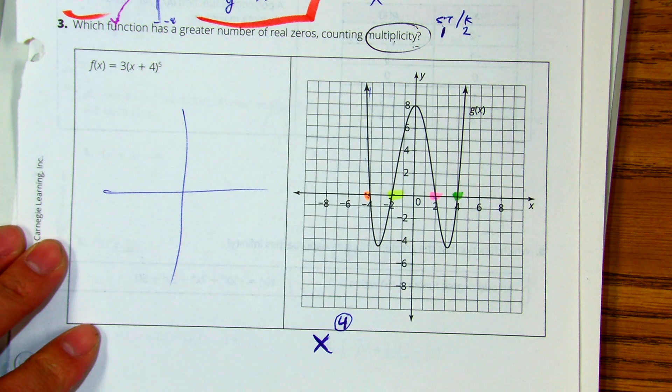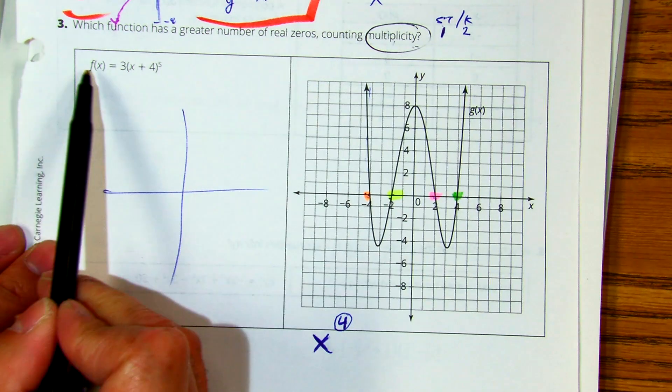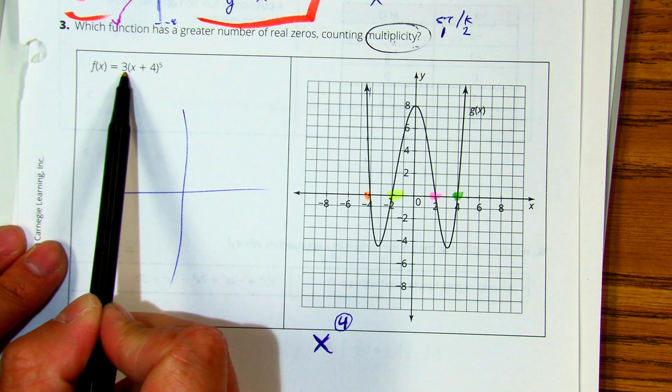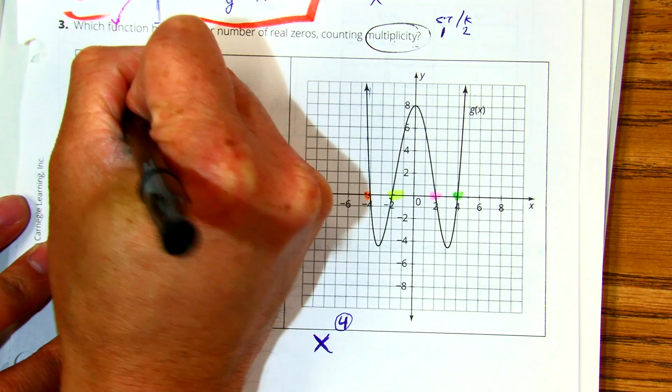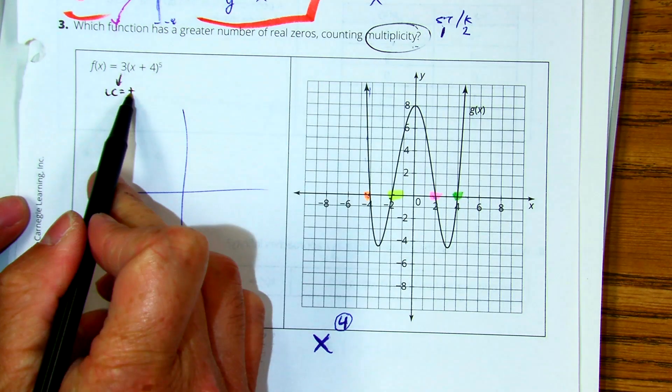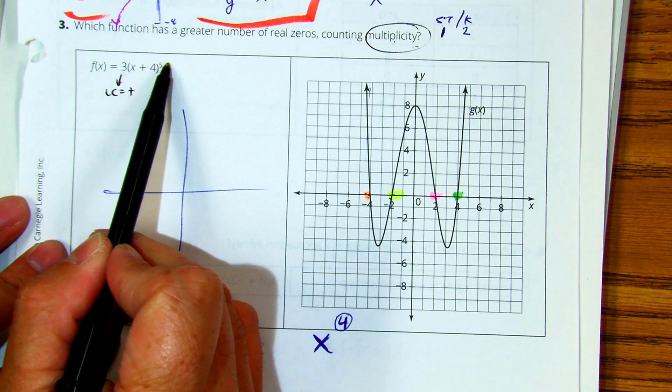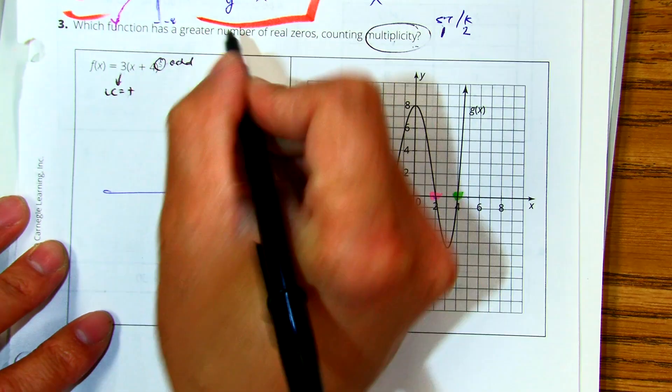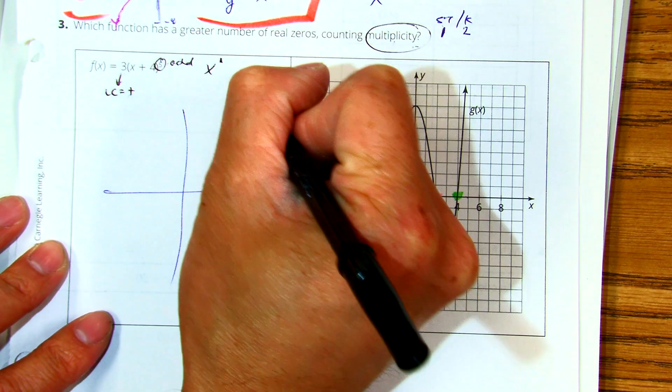Now on this problem, f of x says three, that's a positive right? Positive coefficient, leading coefficient is positive. So the arrows are going to stay the same. It's to the fifth degree polynomial so this is an odd so my arrows are going to be split like x to the first the line